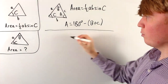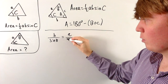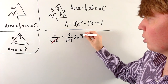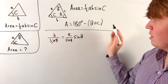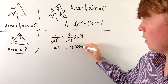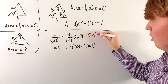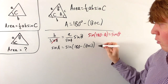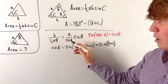Using the sine rule, b over sine B equals a over sine A. We multiply by sine B, but the issue is we don't yet know sine A. We know A is 180 minus (B plus C), so sine A is sine of 180 minus (B plus C). Remembering that sine(180 minus theta) equals sine theta, we can rewrite sine A as sine(B plus C), just like before.